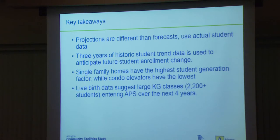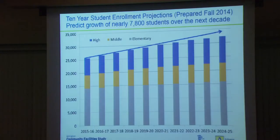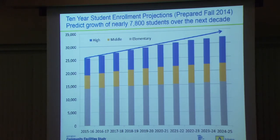Now let's get to the projections and anticipated enrollment. We're going to get back on that roller coaster. Looking at the slope of that line between 2015 and 2024 — it's going up. We're anticipating 7,800 additional students between now and 2024.